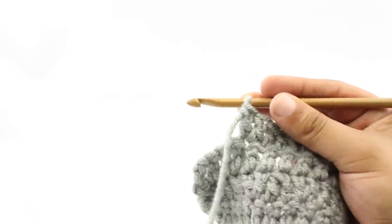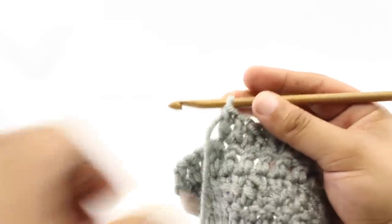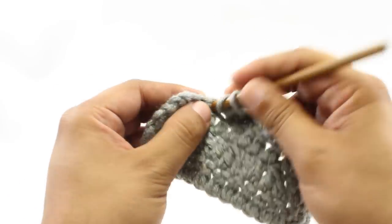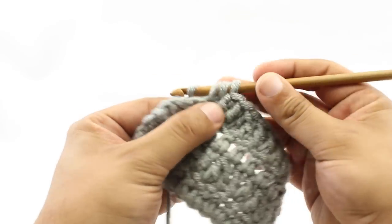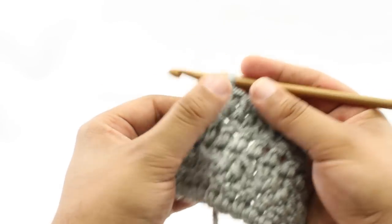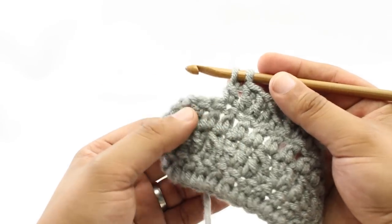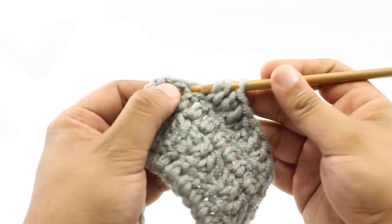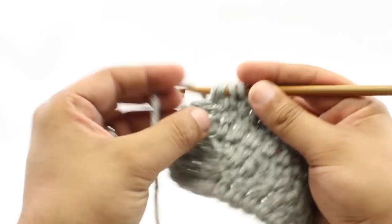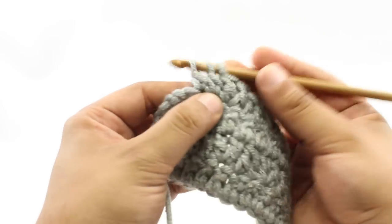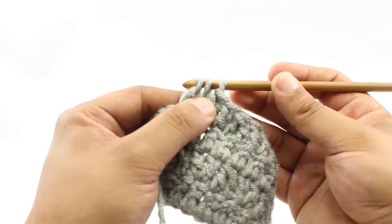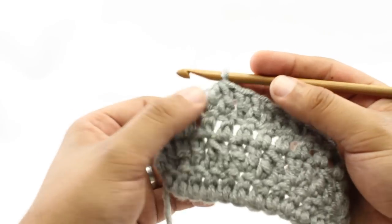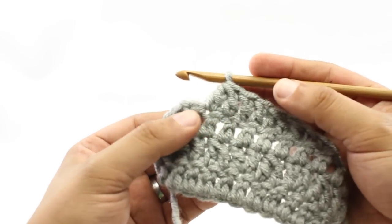So to do this again, I won't go through all the steps individually, but we are going to yarn over, insert and draw through. Yarn over and draw through two. And then we will yarn over and draw through all three loops on our hook. So there we have it. And that's how we do the double crochet two together decrease.